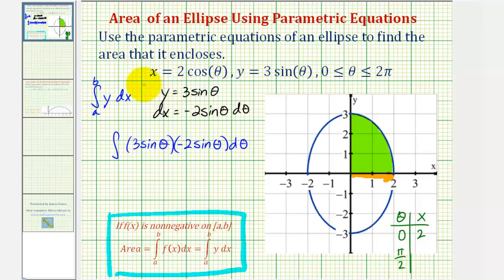But when theta is pi over two, notice how x would be two times cosine pi over two, or two times zero, which is zero. So in this case, we're actually going to integrate from pi over two to zero, which would be the same as integrating from x equals zero to two.